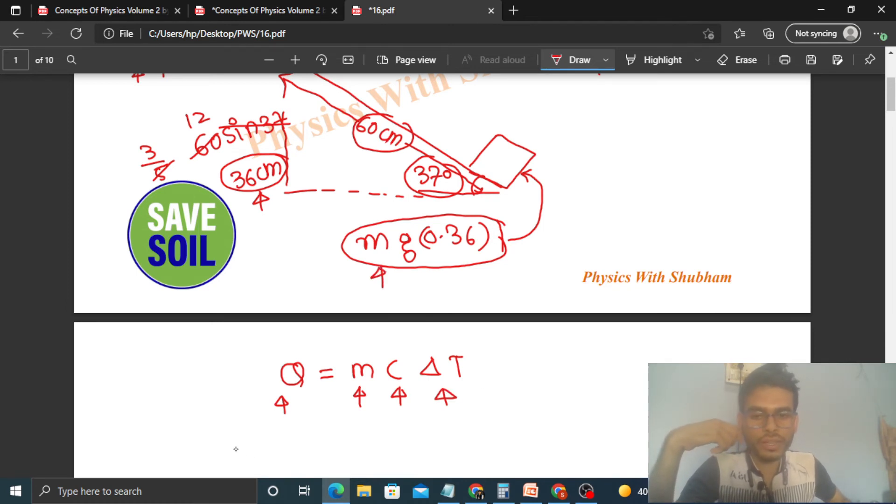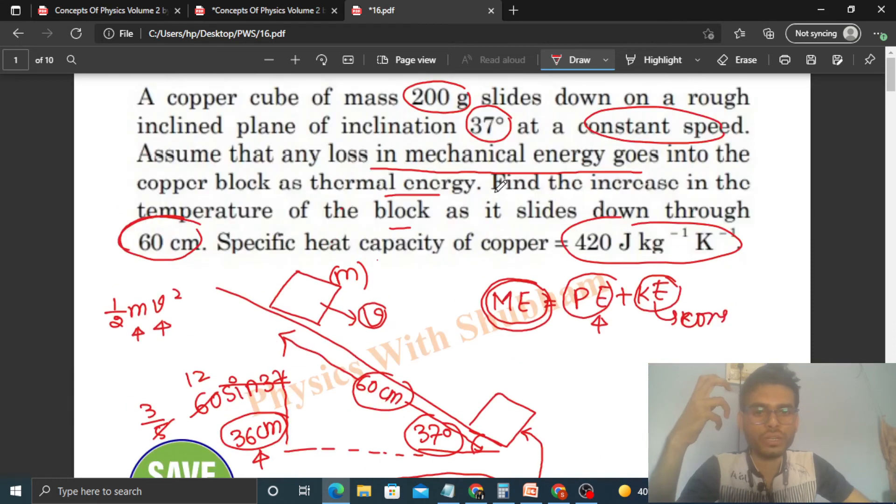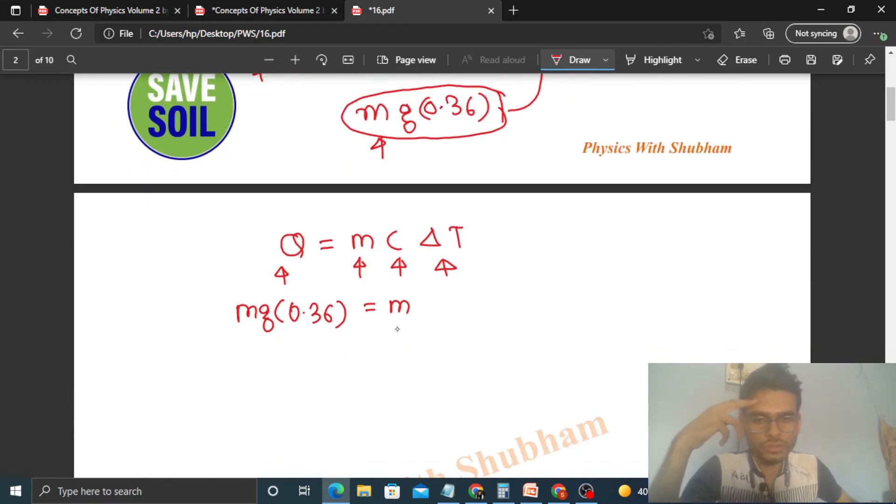So what is Q? That is m g times 0.36, that equals m times c. C is given in the question, that is 420, right? So c's value will be 420 and this change in temperature we have to find out.